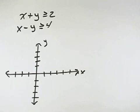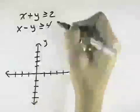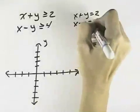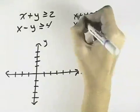We want to graph the solution set of the system of inequalities. What that means is I first graph each of these as an equality, and I'm going to do that using intercepts.